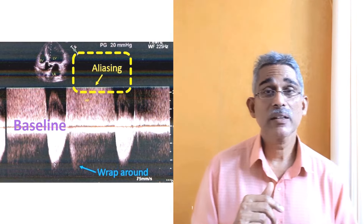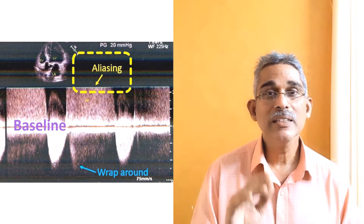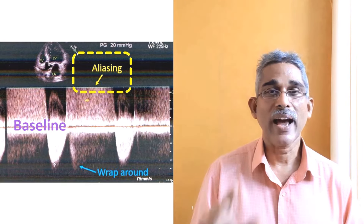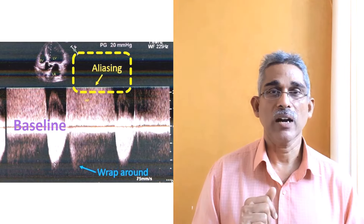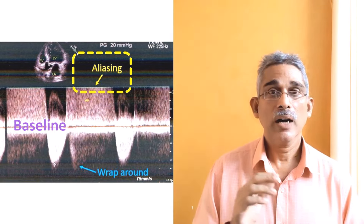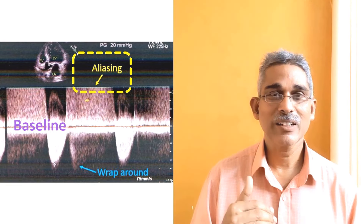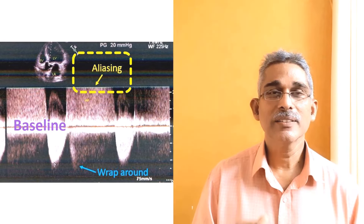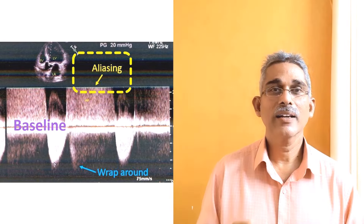Another important aspect is that for any measurement, it is always good to have an ECG along with echocardiography. When you connect the ECG leads, it is easy to time between systole and diastole. Systole starts from the peak of the R wave and ends towards the end of the T wave. Without ECG, what you think is a diastolic jet may be a systolic one and vice versa. Every echocardiograph has ECG leads that you can attach for timing.